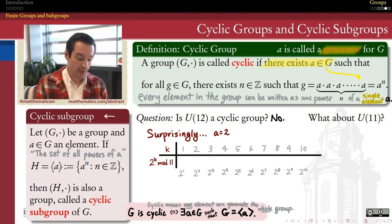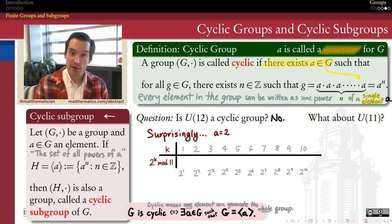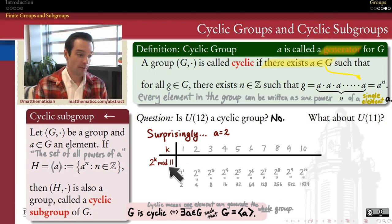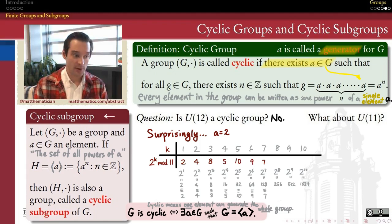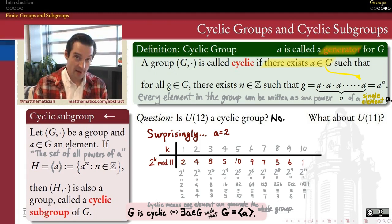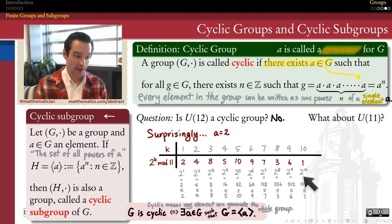Let's compute the powers of 2 mod 11 explicitly. 2 to the first is 2, 2 squared is 4, 2 cubed is 8, and continuing up to 2 to the tenth, which is 1024. Reducing mod 11: 2, 4, 8 stay the same; 16 reduces to 5; 32 to 10; 64 to 9; 128 to 7; 256 to 3; 512 to 6; and 1024 has remainder 1 when divided by 11, which is the identity element of U11. Note that once we hit the tenth power and get back to 1, the eleventh power equals the first power again, since 2^10 = 1.